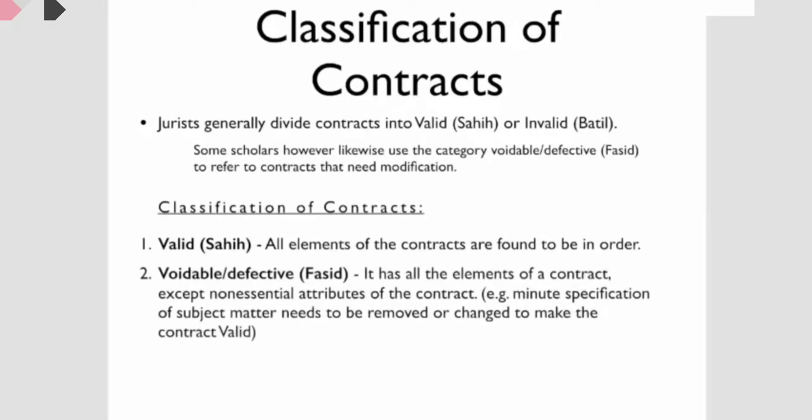A voidable contract has all the elements of the contract except non-essential attributes of the contract. For example, some specification of the subject matter — for instance, let's say color.